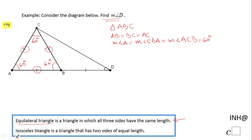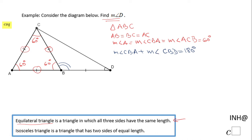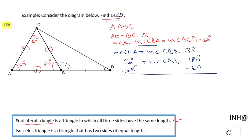Now I can find this angle here. Angle CBA and the angle I marked — which is angle CBD — form a linear pair, so when you add them you get 180 degrees. Since CBA is 60 degrees, I can find CBD by subtracting: the measure of angle CBD is 120 degrees.